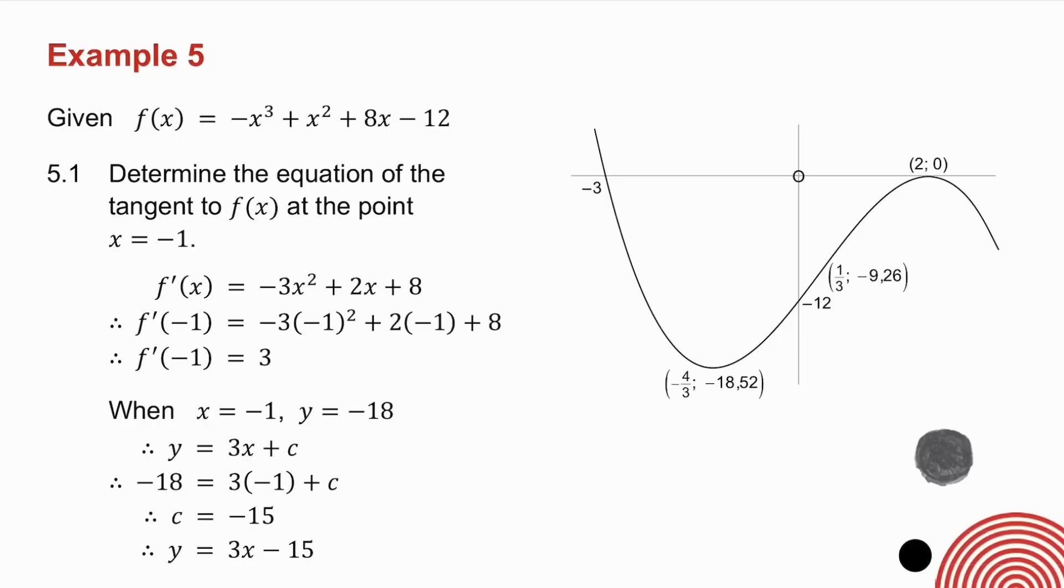Now if x is minus 1, I need to get what my y value is. So you substitute minus 1 into the original function, and you get that when x is minus 1, y is minus 18. I've got the derivative to be 3, so that means that my tangent is y equals 3x plus c. In place of x goes minus 1. In place of y goes minus 18. And there's the equation of my tangent.